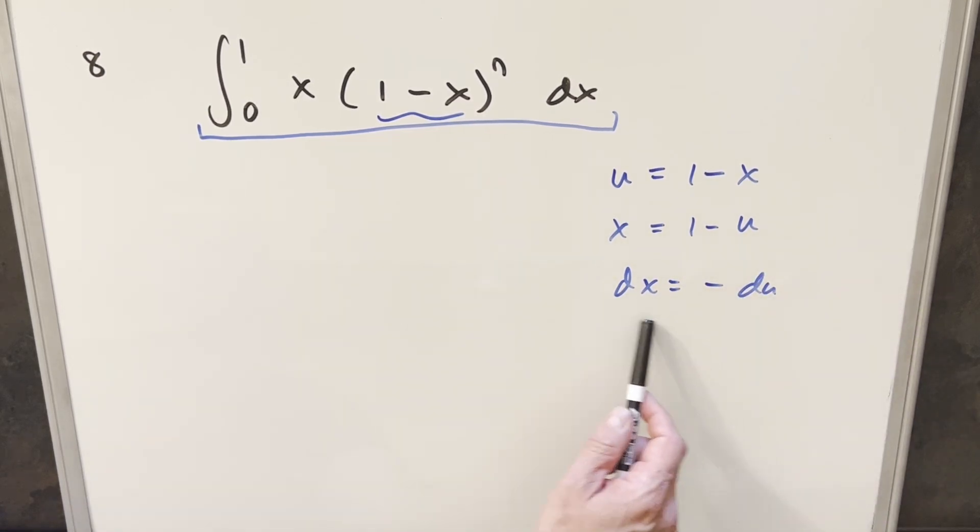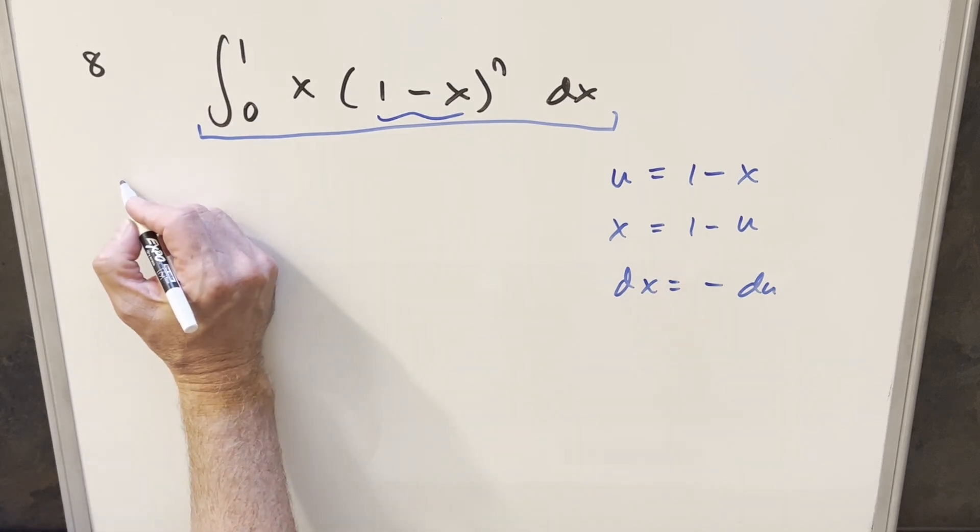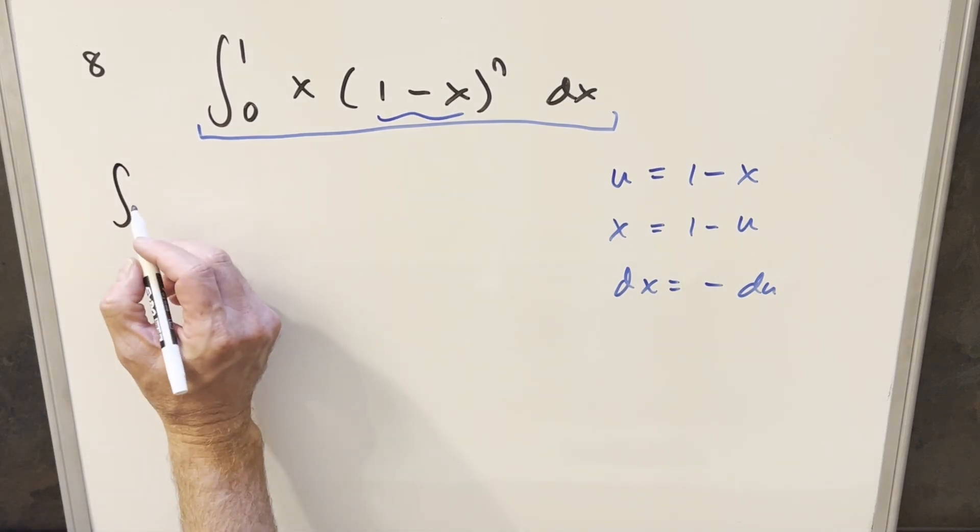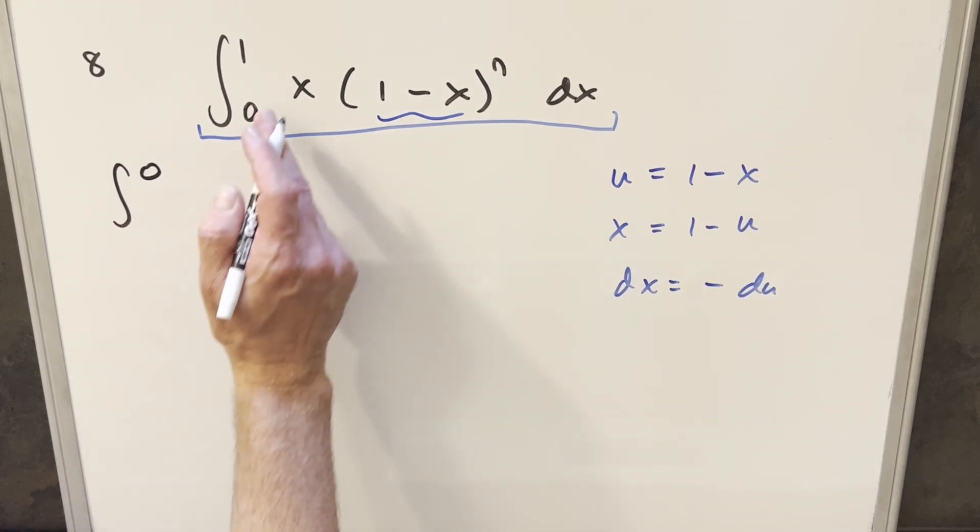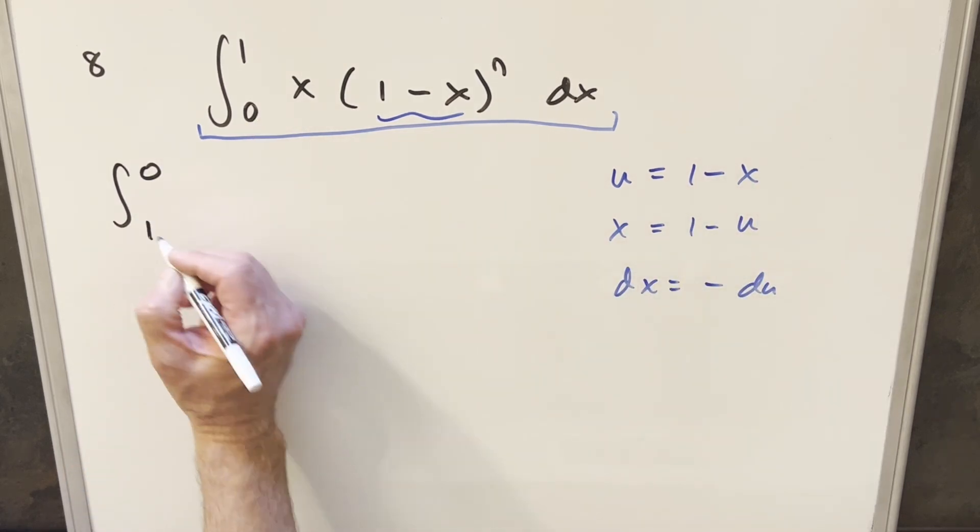And one other thing you may notice, this u substitution is exactly the same as doing King's principle, but I already kind of wrote it out, so let's just do the u substitution. So when you do this, if you plug 1 in here, the upper bound's going to be 0. You plug 0, and the lower bound's going to be 1.